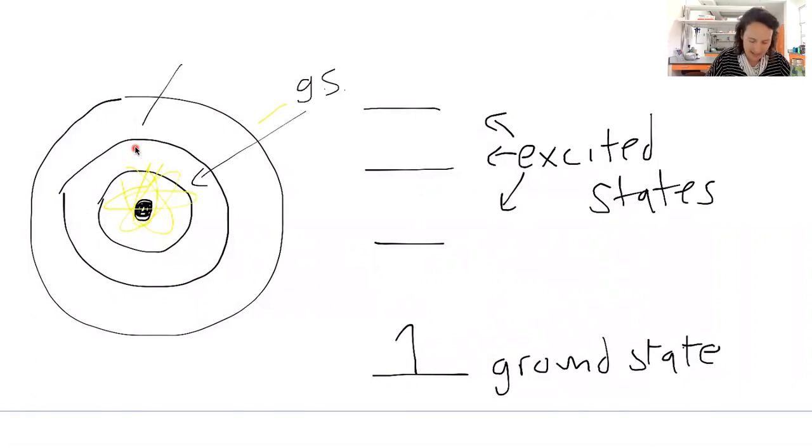A way that we usually represent this in a linear fashion, instead of using that picture, is we show that we have our ground state at the bottom. And then we draw horizontal lines above that, and those represent higher excited states that the electrons could jump up into.